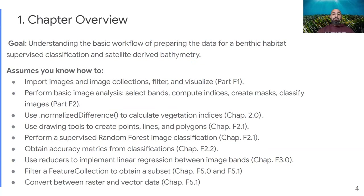These assume that you have already gone through the previous chapters about how to import images and image collections, filter and visualize these, perform some basic image analysis, which bands to select, compute some indices, create masks, classify images, use normalized difference to calculate vegetation indices, use drawing tools to create points, lines, and polygons as annotation data to perform analysis, perform a supervised random forest image classification, obtain accuracy metrics from classifications, use reducers to implement linear regression between image bands, filter a feature collection to obtain a subset, and have the ability to convert between raster and vector data.